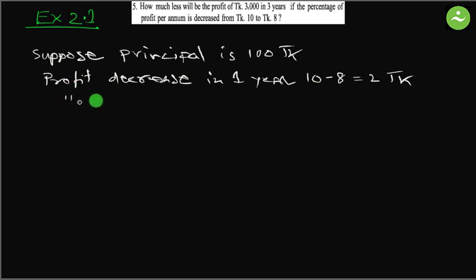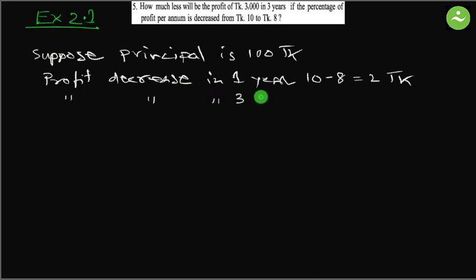Therefore, we have to calculate profit decrease over three years. Profit decrease in three years equals 3 multiplied by 2, which equals 6 taka.